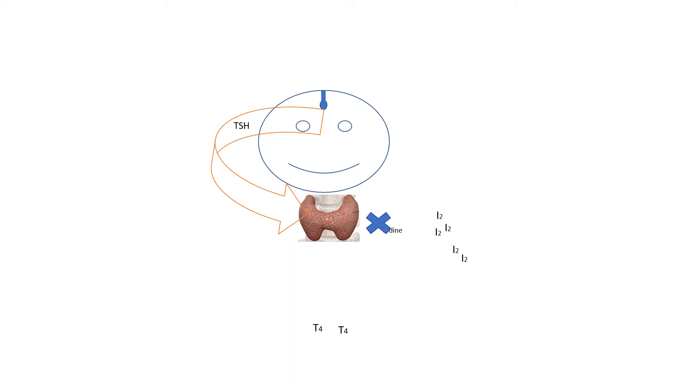This inadequate amount of thyroid hormone sends feedback to the pituitary to secrete more TSH to enable the thyroid gland to produce more thyroxine.